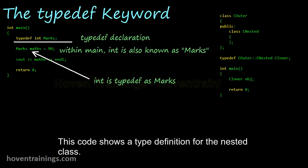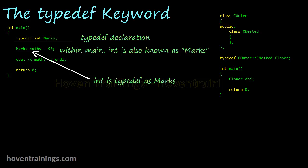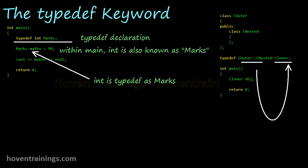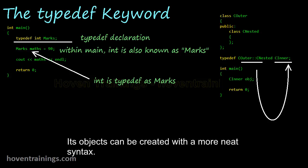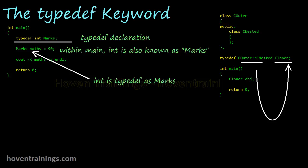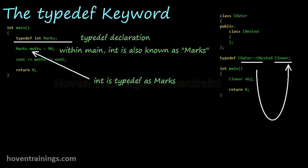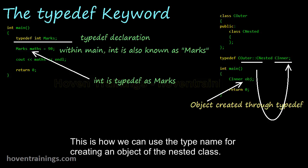This code shows a type definition for the nested class. This is the new name for the nested class, and its objects can be created with a neater syntax. Type definitions are mostly used for simplification of longer names like this, allowing us to use the type name for creating an object of the nested class.